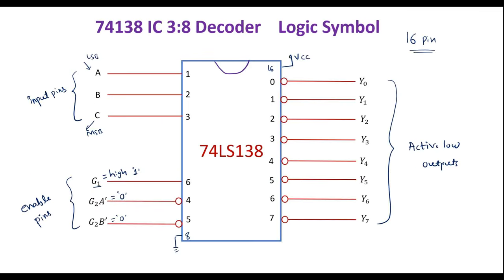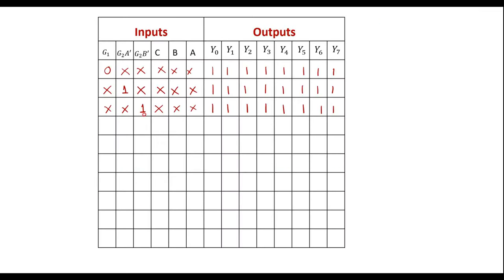So the conditions are: G1 must be 1, G2A-bar must be 0, and G2B-bar must be 0 — only then is the 74138 IC active. With 3 inputs, we have 2³ = 8 possible input combinations: 000, 001, 010, 011, 100, 101, 110, and 111.